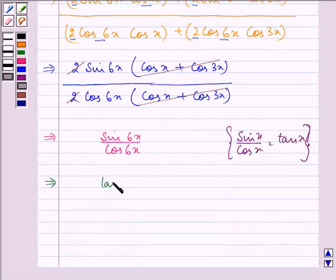So, the answer will be tan 6x that is our right hand side. So, left hand side is equal to right hand side and hence proved.